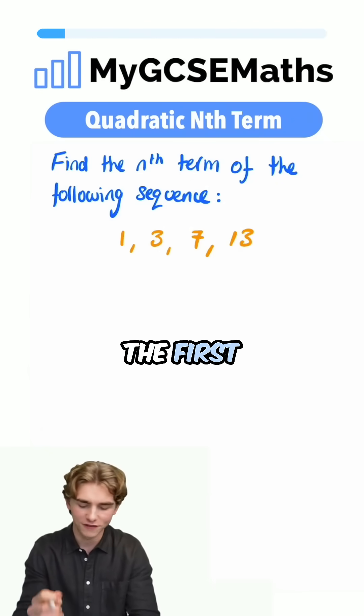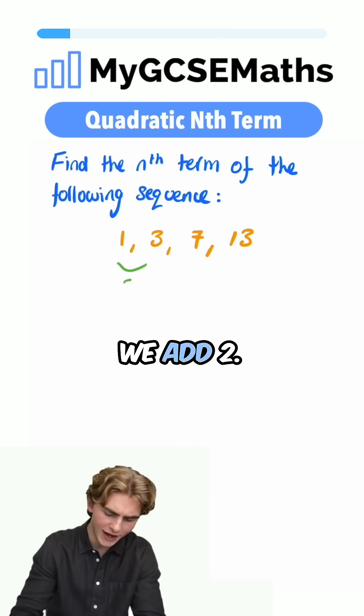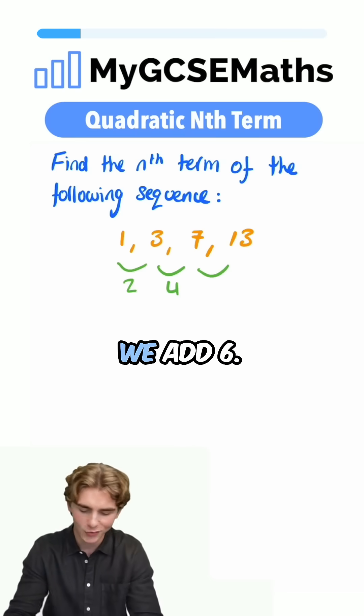The first step is going to be to find the first difference. To get from 1 to 3, we add 2. To get from 3 to 7, we add 4. To get from 7 to 13, we add 6.